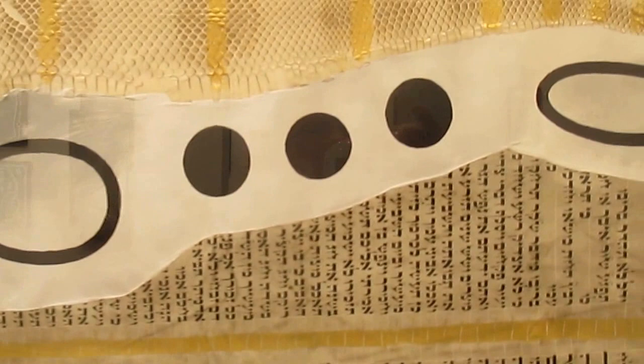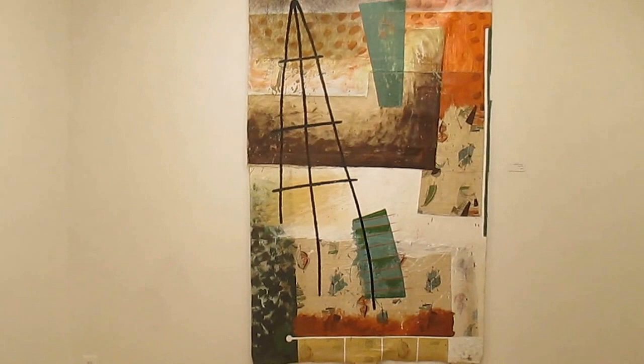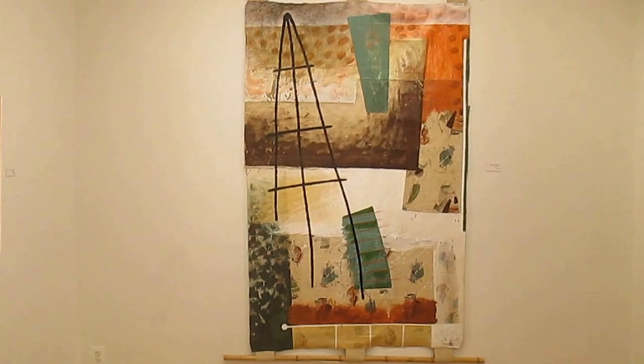This piece is called Japanese Influence. And it's sort of like a Japanese scroll. And it has bamboo on the top and the bottom. And it's collaged fabric and canvas with acrylic and oil stick.